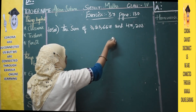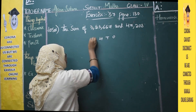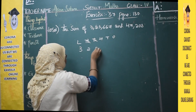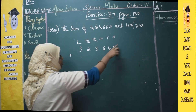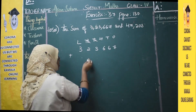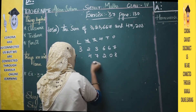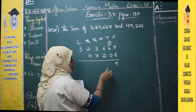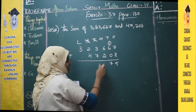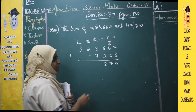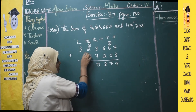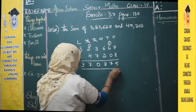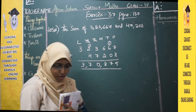Adding 3,23,667 and 47,208: 7 plus 8 is 15, carry 1, write 5; 6 plus 0 is 6 plus carry 1 is 7; 6 plus 2 is 8; 3 plus 7 is 10, carry 1, write 0; 2 plus 4 is 6, plus carry 1 is 7; 3 stays as 3. So the sum of the first pair is 3,70,875.